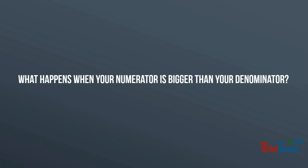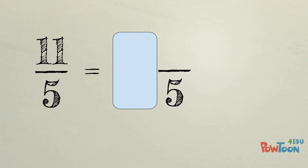What happens when your numerator is bigger than your denominator? We call this an improper fraction. Let's look at 11 fifths. 11 the numerator is bigger than the denominator of 5, so we have to make this into a mixed number. A mixed number is one with a whole number and a fraction.